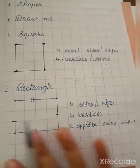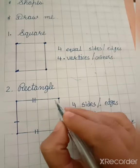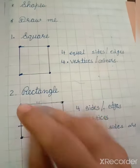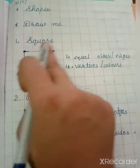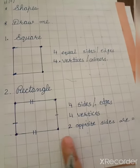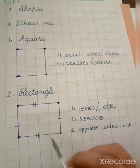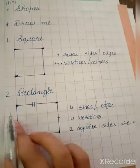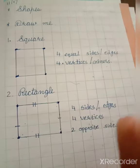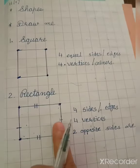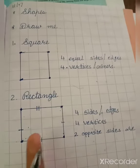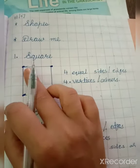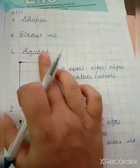A rectangle also has four sides and four vertices, but in a rectangle two opposite sides are equal — meaning two pairs of opposite sides have the same measurements. If you measure the rectangle, the opposite sides will come to the same measurement. Two opposite sides equal — that is called a rectangle. Whereas if all four sides are equal, that is called a square.